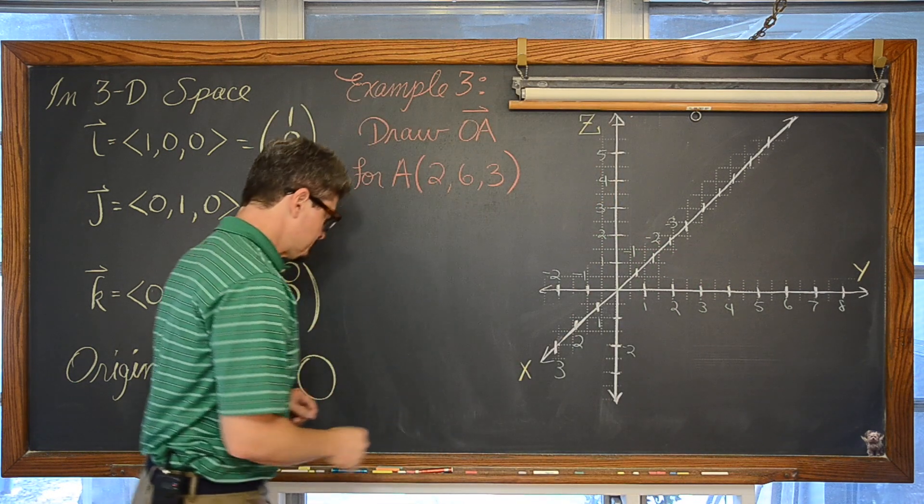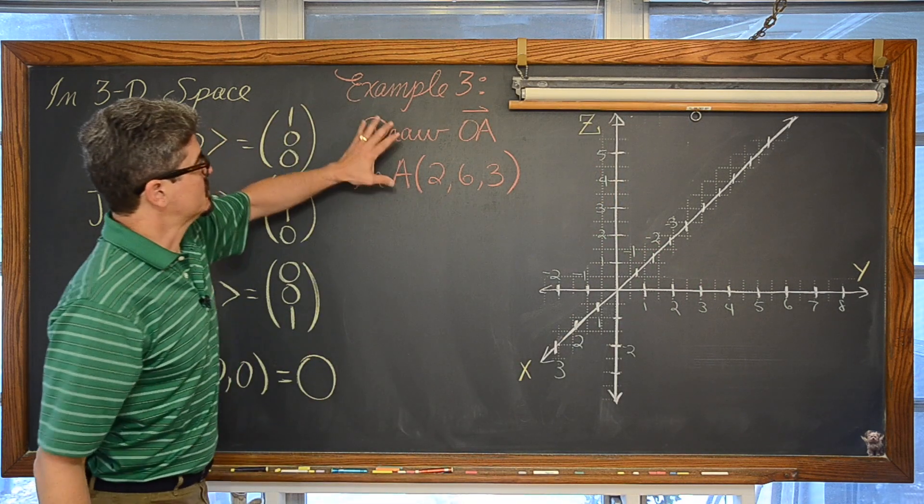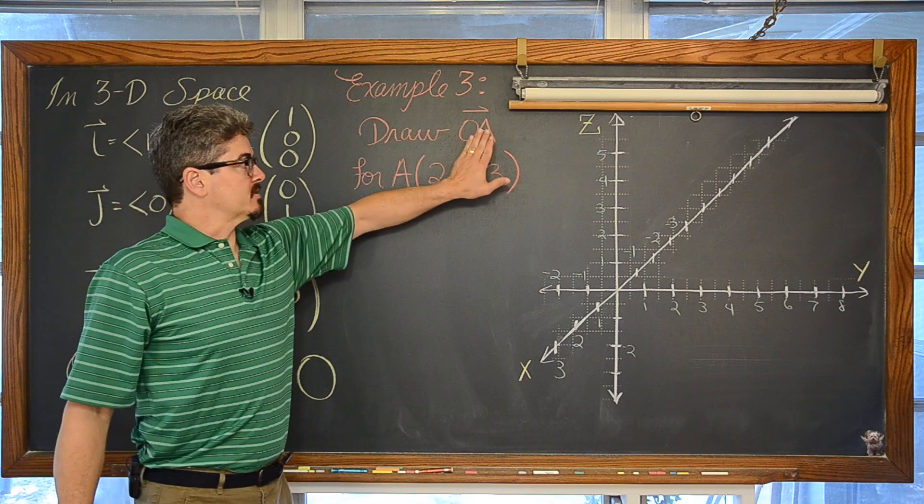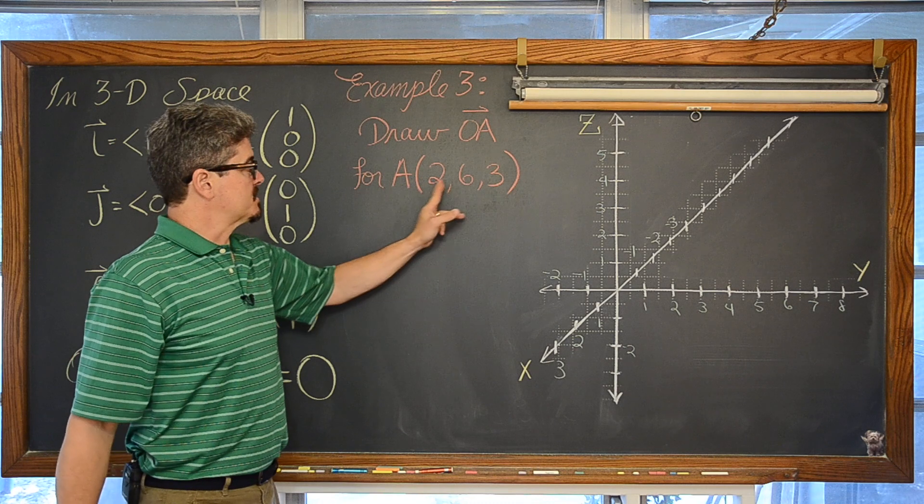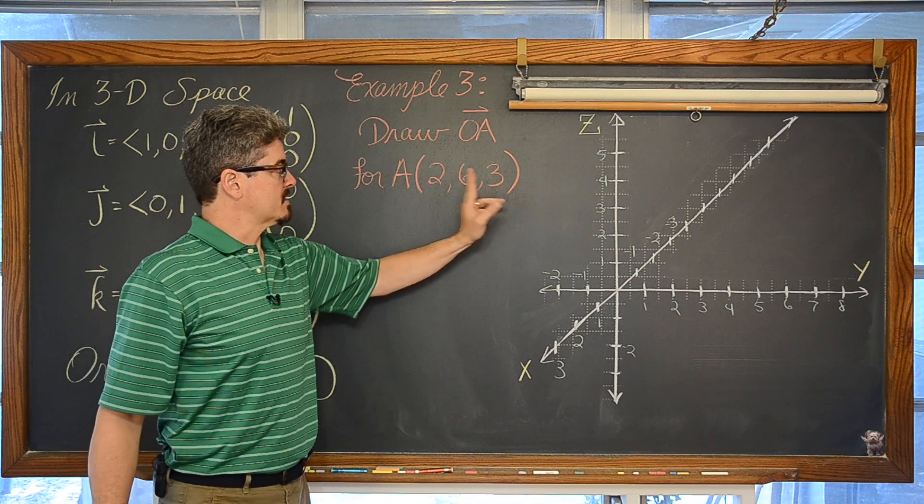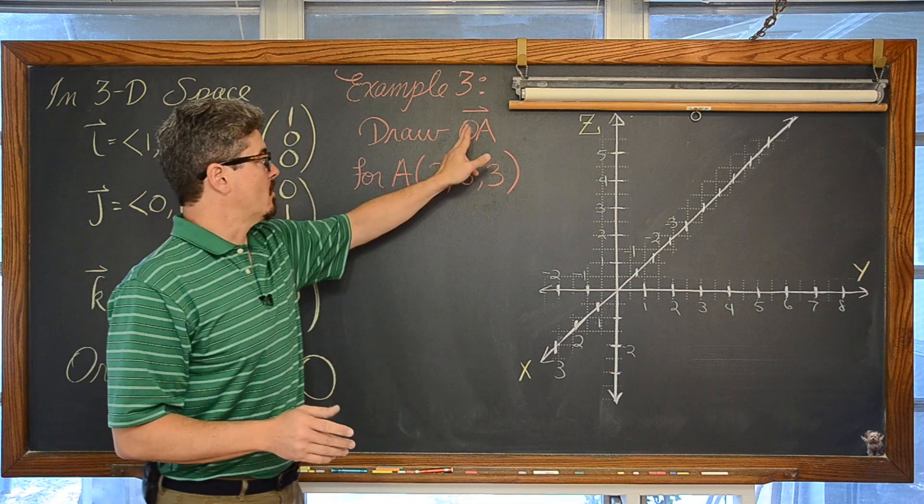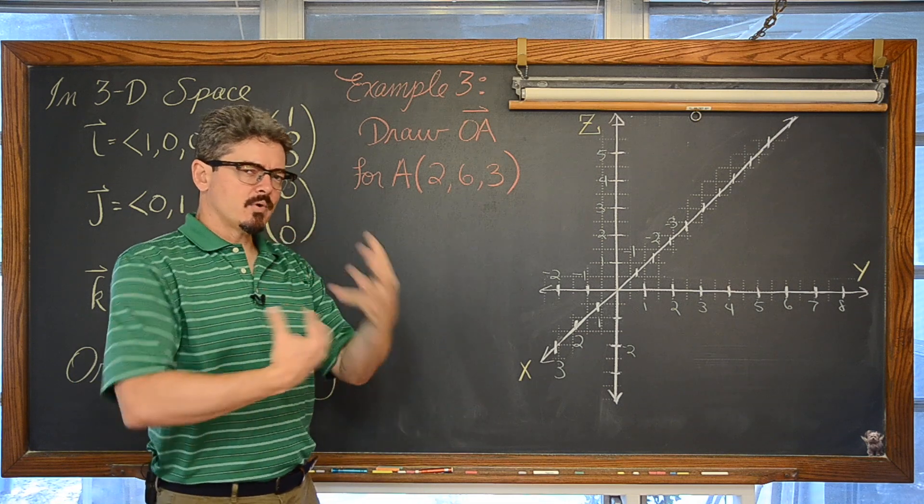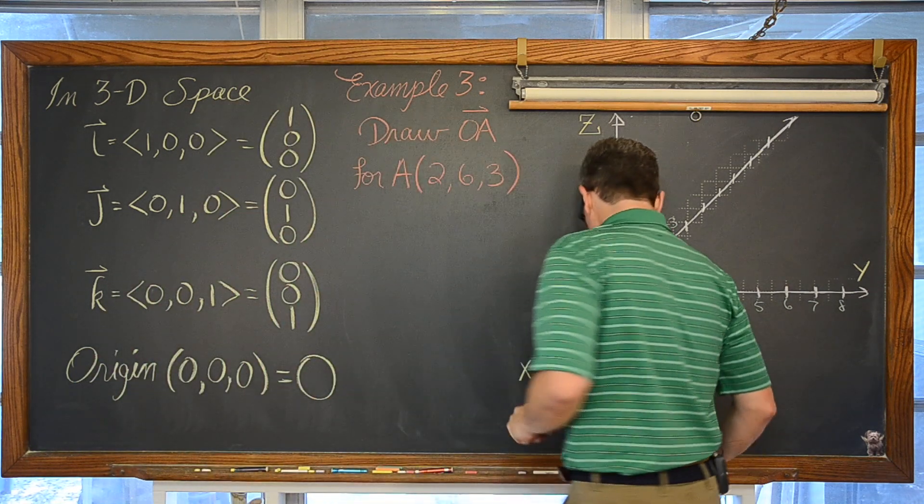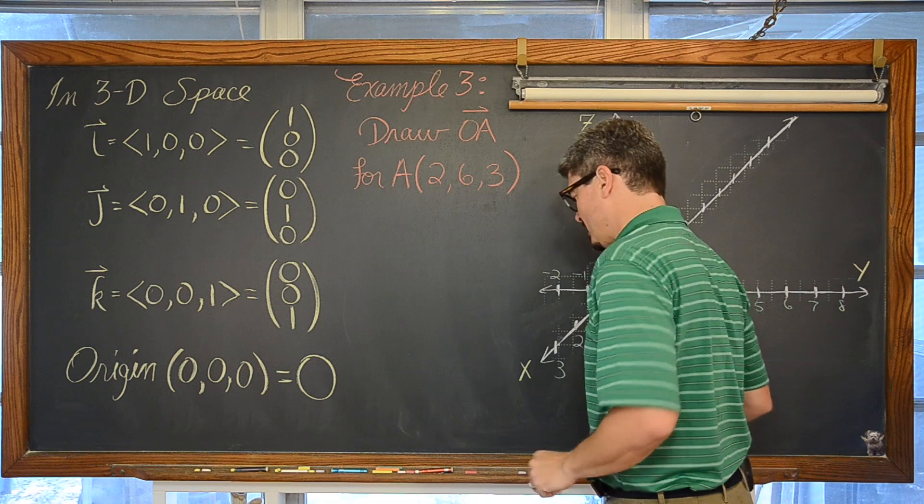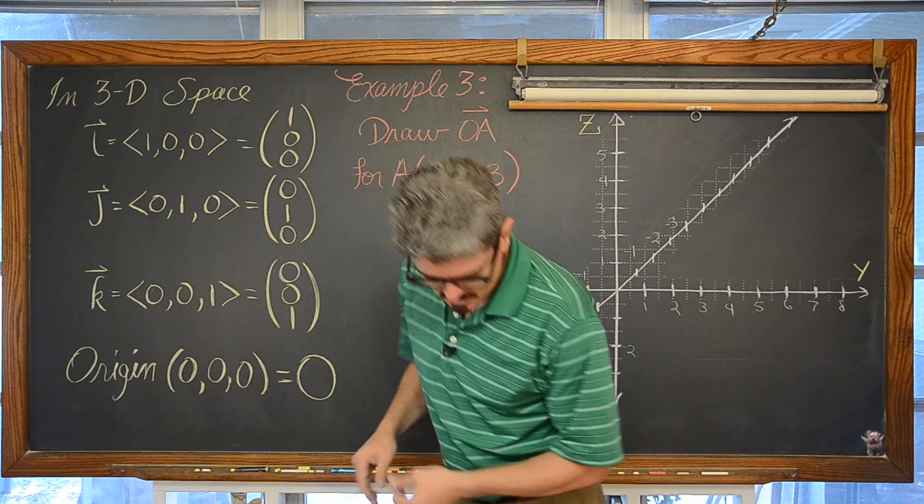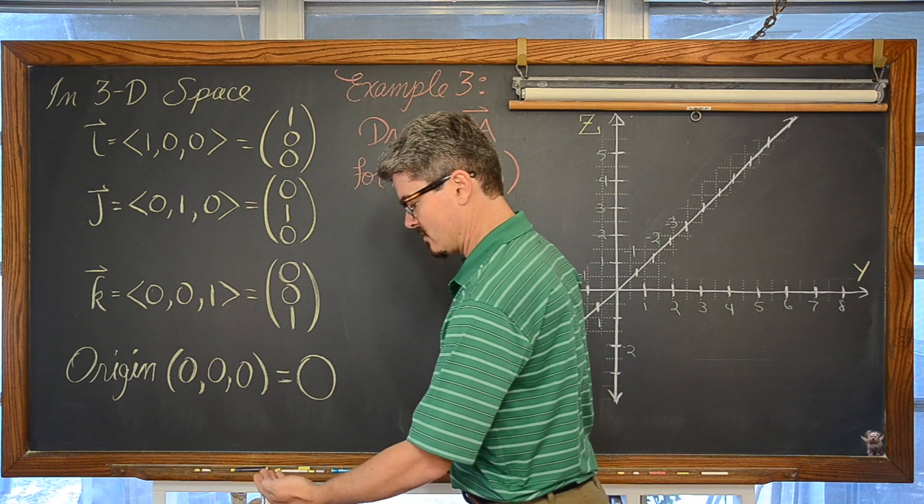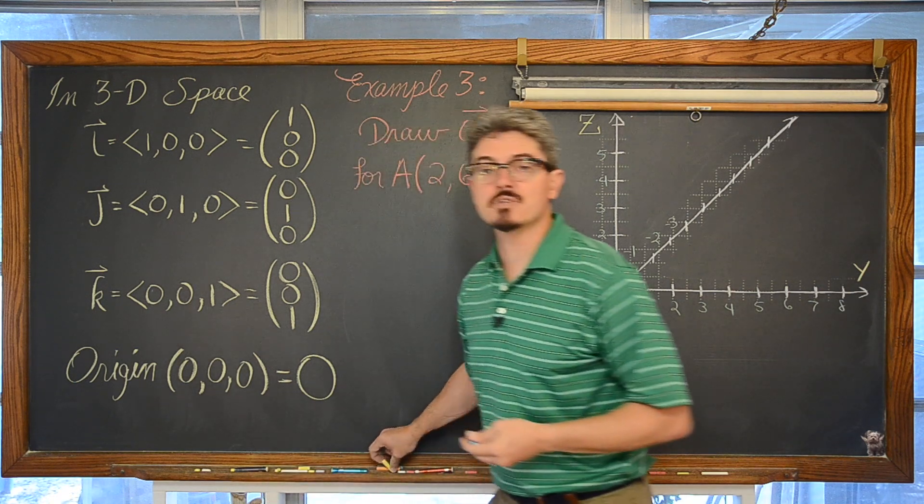And we are going to try our best to draw the position vector OA for the coordinate of A which is (2, 6, 3). So we are going to try and draw a vector from the origin to A and create that depth as we go along. And to do that it is probably going to be helpful to do some color coding, which I know is a little bit hard to see in this camera, but I am going to use green, blue, and orange.